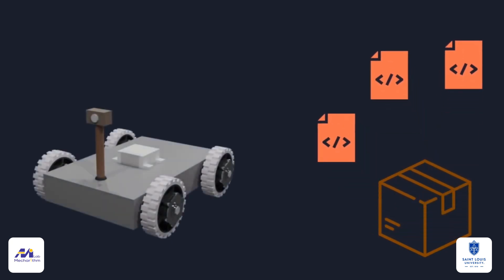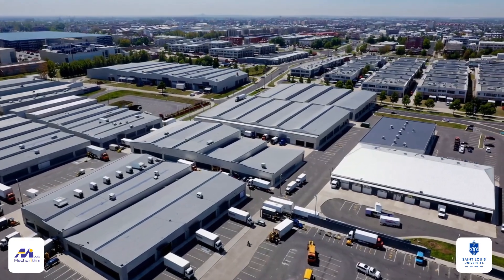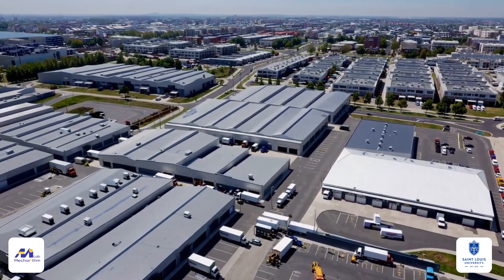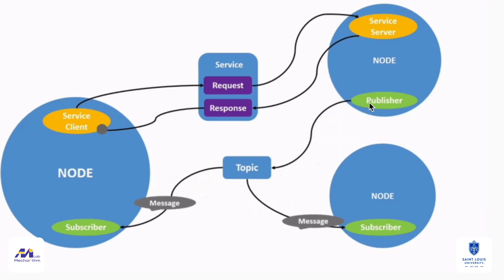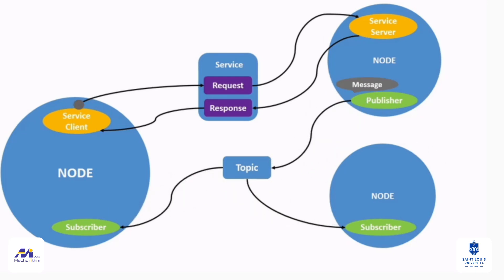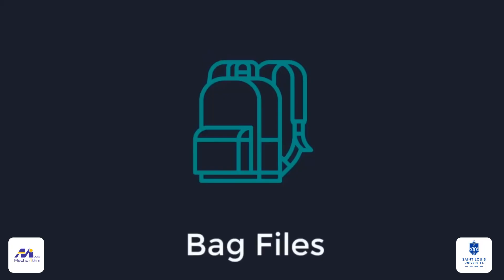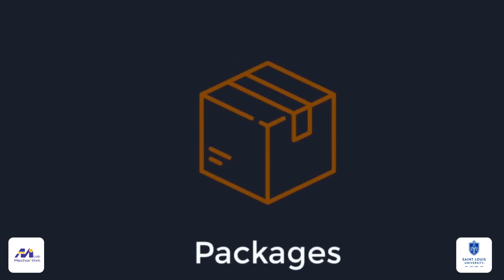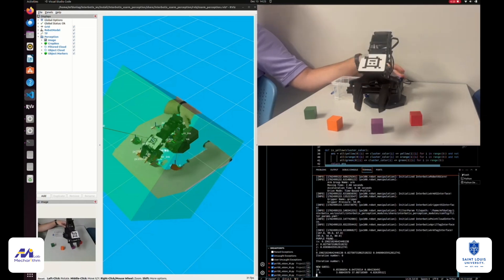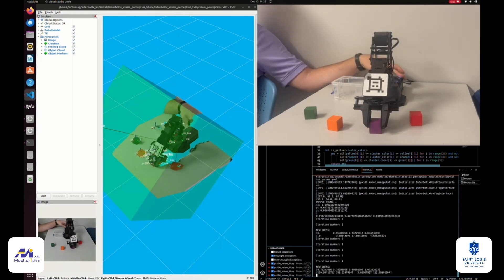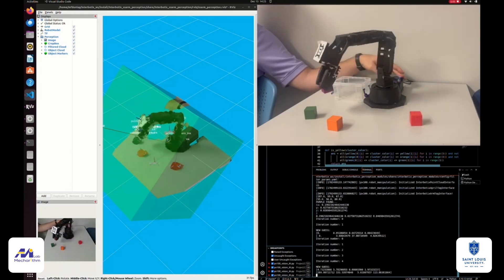This architecture reflects the open-source ethos of ROS — a community of warehouses sharing tools to accelerate collective progress. This is the communication architecture of ROS 2: a modular, distributed, and robust framework for intelligent machines. By understanding nodes, topics, messages, publishers, subscribers, services, actions, DDS, bag files, and packages, we gain insight into the very language of modern robotics. It is a city built not of bricks, but of computation, collaboration, and discovery.